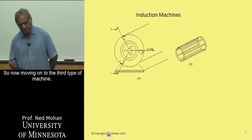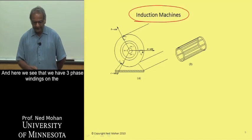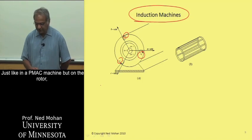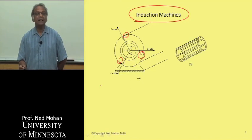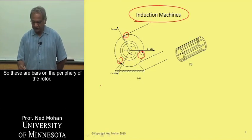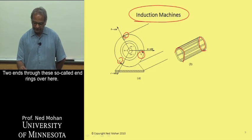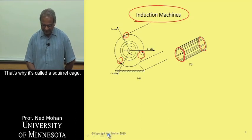So now moving on to the third type of machine, which is an induction machine, really a workhorse. And here we see that we have three-phase windings on the stator, A, B, and C, just like in a PMAC machine. But on the rotor, instead of magnets, we have a squirrel cage. So these are bars towards the periphery of the rotor, copper bars, which are then short-circuited at two ends through these so-called end rings over here. And that's why it's called a squirrel cage.